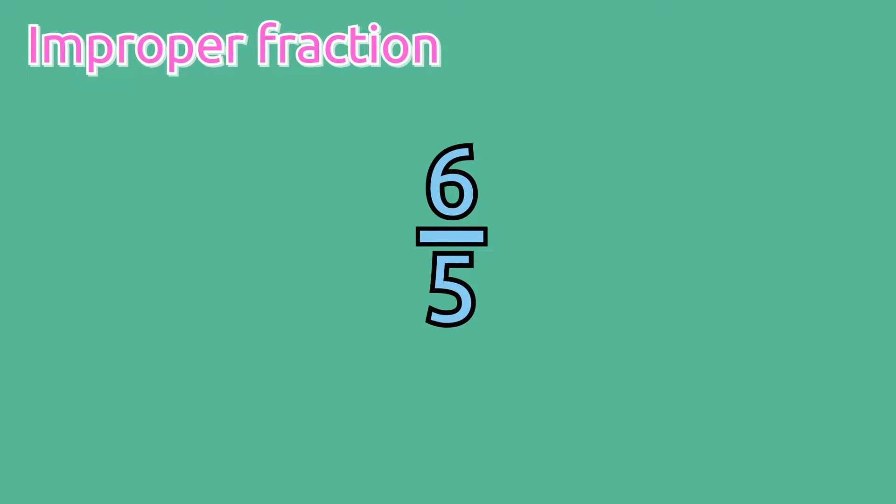If we look at 6 fifths, we know that our denominator tells us how many equal parts our whole has been partitioned or divided into. Since our denominator is 5, that means that our whole has been partitioned or divided into 5 equal parts.